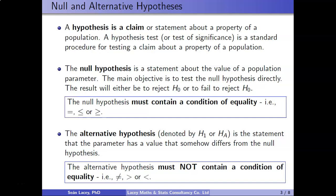In statistics we call one the null hypothesis and the other the alternative hypothesis. When setting up our hypotheses we must be consistent. The rule is that your null hypothesis must contain a condition of equality. There are three conditions of equality: equals, less than or equal to, and greater than or equal to.